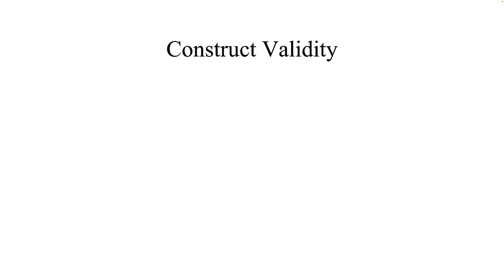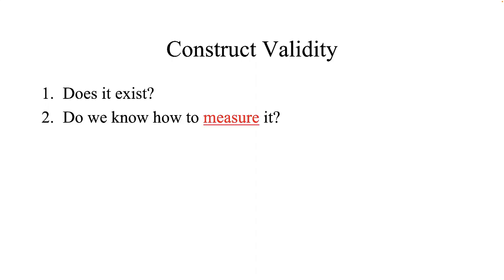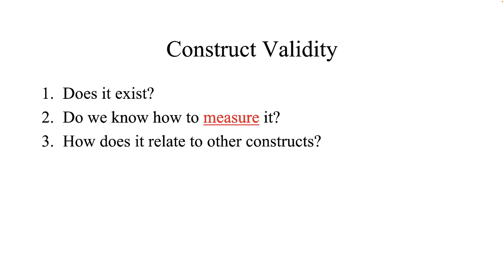In layperson's terms, construct validity answers the question: Does it exist? Do we know how to measure it? And how does it relate to other constructs? A construct is often referred to as a latent construct — latent means unobservable. The construct part refers to a concept, characteristic, ability, or skill worth measuring. Some examples include intelligence, conscientiousness, and self-esteem. We know that these things exist, but they are latent because they are not directly observable — you cannot see, taste, or smell intelligence, conscientiousness, or self-esteem.